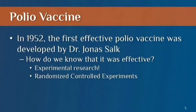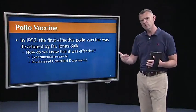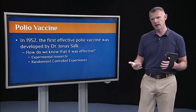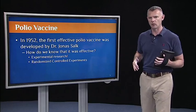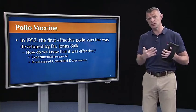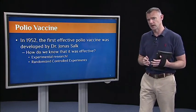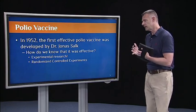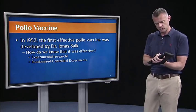How do we know, in retrospect over 60 years later, that it was effective? Well, through experimental research — more specifically, through randomized controlled experiments. This set of studies is now known as the Salk vaccine trials, one of the greatest examples of experimental research put to use to solve a very critical problem facing modern society, and it's a really great success story of experimental research.